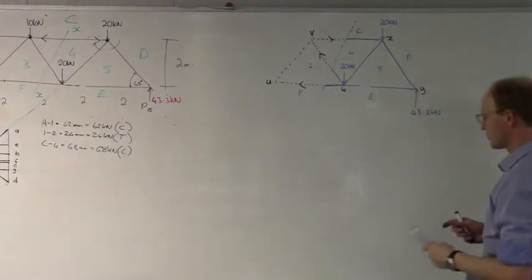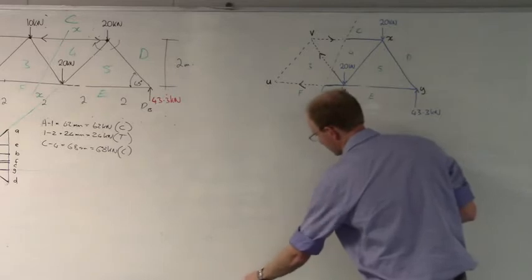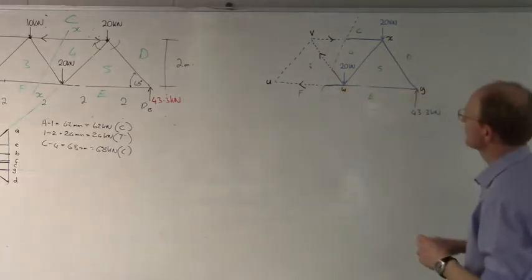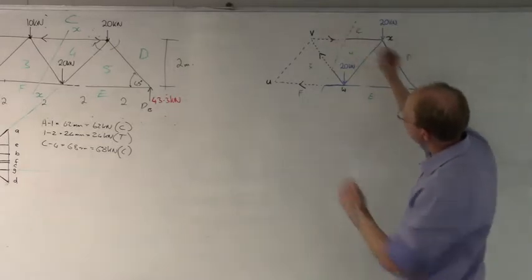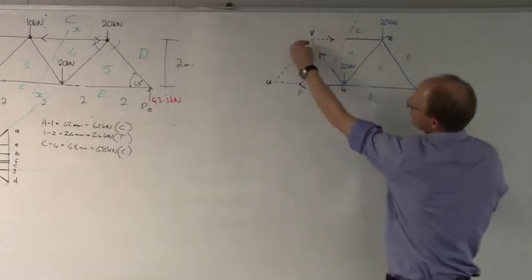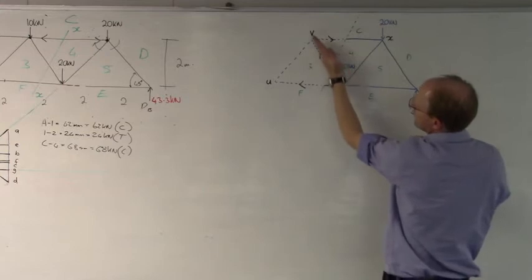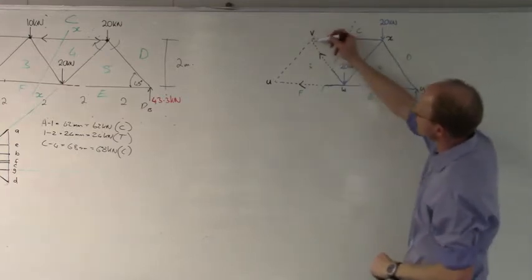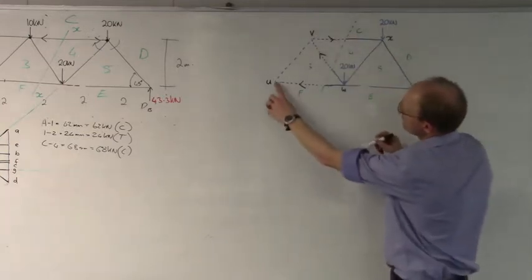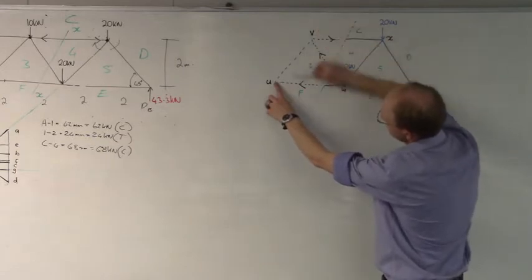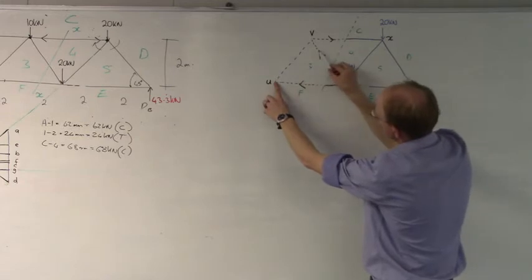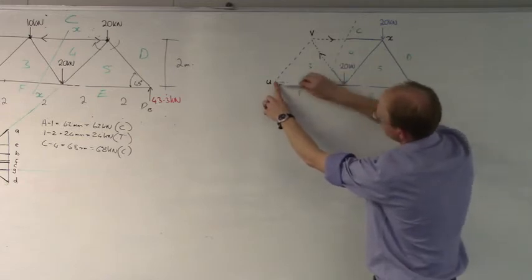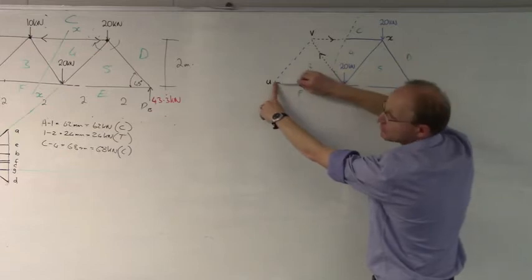To solve the question, we take moments about a certain point. The easiest approach is to take a moment about a point where two forces have zero perpendicular distance, because those will cancel out. If I take moments about this point, I'll have a force times a perpendicular distance, another force times a perpendicular distance, and one force will cancel out because its perpendicular distance is zero.